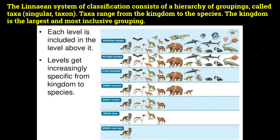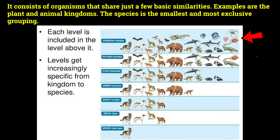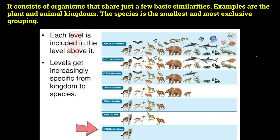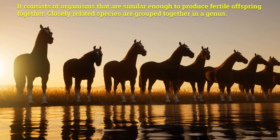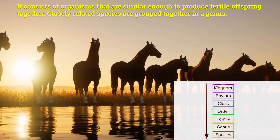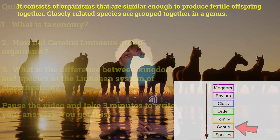The Linnaean system of classification consists of a hierarchy of groupings called taxa. Taxa range from the kingdom to the species. The kingdom is the largest and most inclusive grouping — it consists of organisms that share just a few basic similarities, such as the plant and animal kingdoms. The species is the smallest and most exclusive grouping, consisting of organisms that are similar enough to produce fertile offspring together. Closely related species are grouped together in the genus.